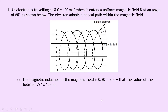In our one and only question, an electron is traveling at 8.0 times 10 to the 7 meters per second when it enters a uniform magnetic field B at an angle of 60 degrees as shown. The electron adopts a helical path within the magnetic field. In the picture, we can see the magnetic field goes to the left and the path of the electron enters the field at 60 degrees to the horizontal, with subsequent helical motion.